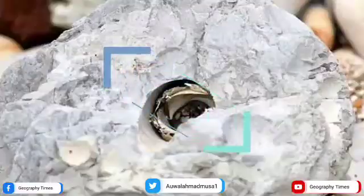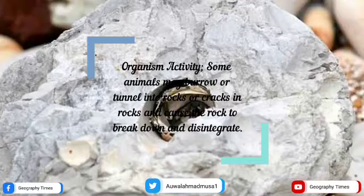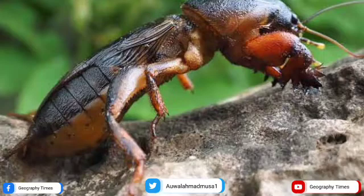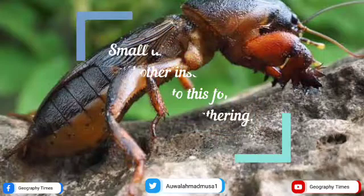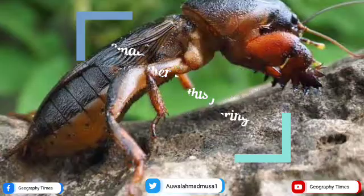This includes organism activity. Some animals may burrow or tunnel into rocks or cracks in rocks and cause the rock to break down and disintegrate. Small animals, worms, and other insects often contribute to this form of biological weathering.